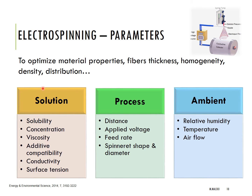Solution parameters include solubility, solution concentration, viscosity, compatibility of any additive, conductivity of the solution, and surface tension. Process parameters include the distance between the tip and collector, applied voltage, feed rate, and spinneret shape and needle. Relative humidity, temperature, and airflow are examples of ambient parameters. All of these parameters are extremely important and must be adjusted carefully for a successful electrospinning process.